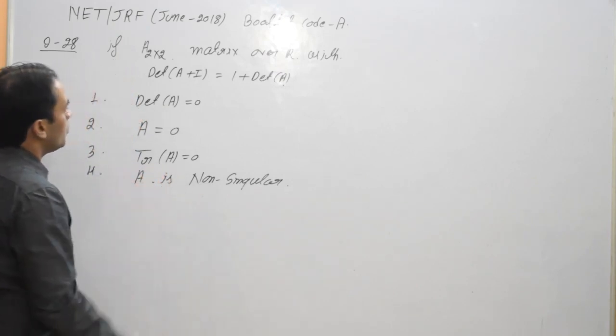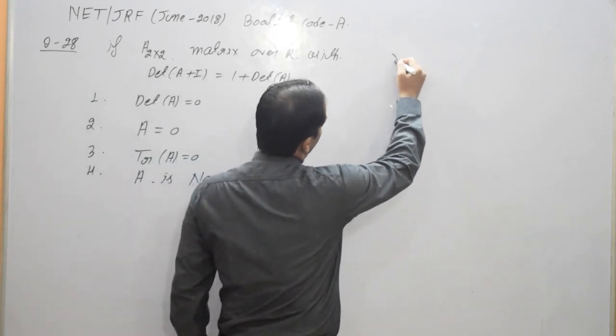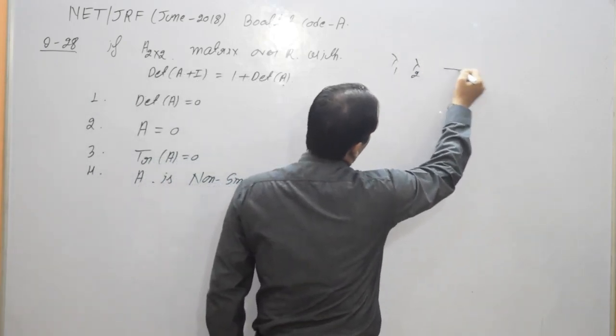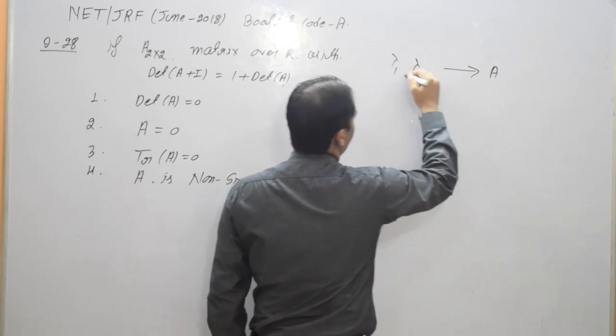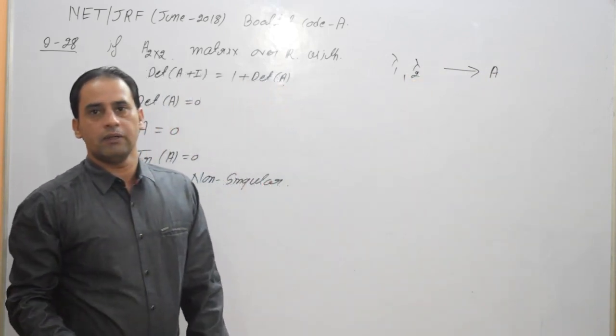Since A is 2×2 matrix, there are two eigenvalues say λ1, λ2 are two eigenvalues of A. They may be same, may be distinct, may be real or may be complex.